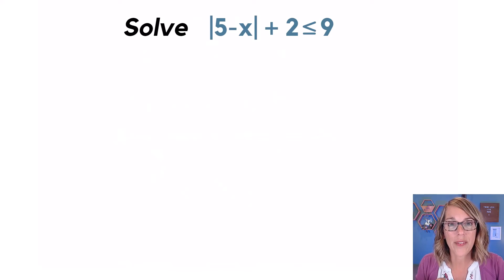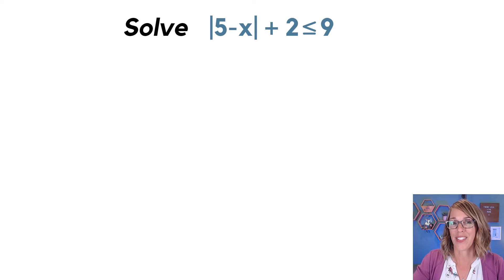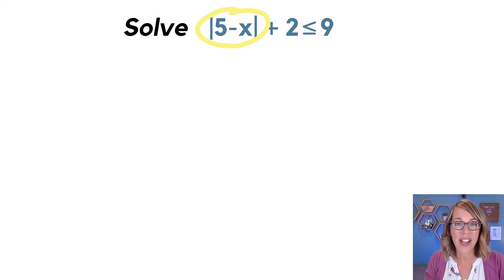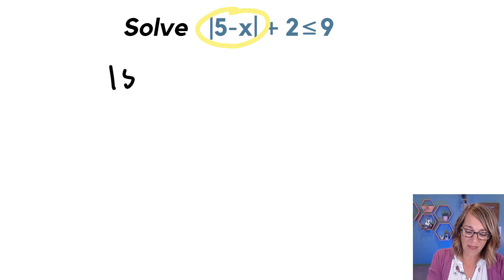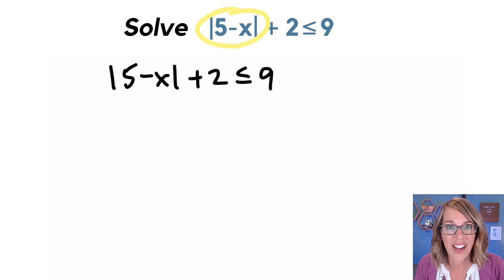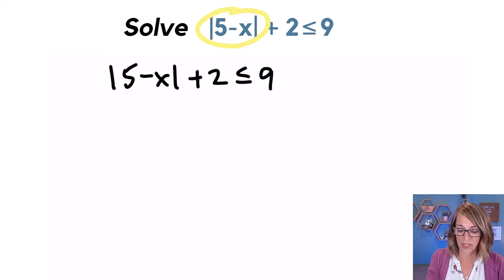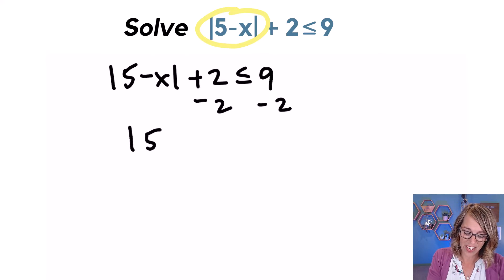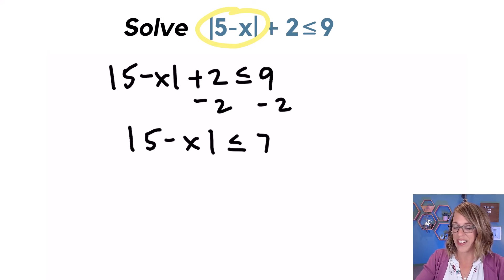In this next one, I'm not quite ready to jump into the distance interpretation because I've got that plus two in the way. So I want to start by isolating my absolute value of five minus x. I take the absolute value of five minus x plus two, less than or equal to nine, and subtract two from both sides to get the absolute value by itself, giving me the absolute value of five minus x is less than or equal to seven.